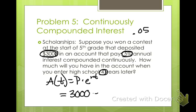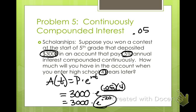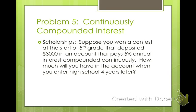3,000 times e raised to .05 times four. So then you just have to follow your order of operations. We're going to do our exponents first. So we need to multiply what's .05 times four. Well, five times four is 20. So we have 3,000 times e to the .2 or .20. So then evaluate e to the .2 power and then multiply that times 3,000. So you should have after four years, $3,664.